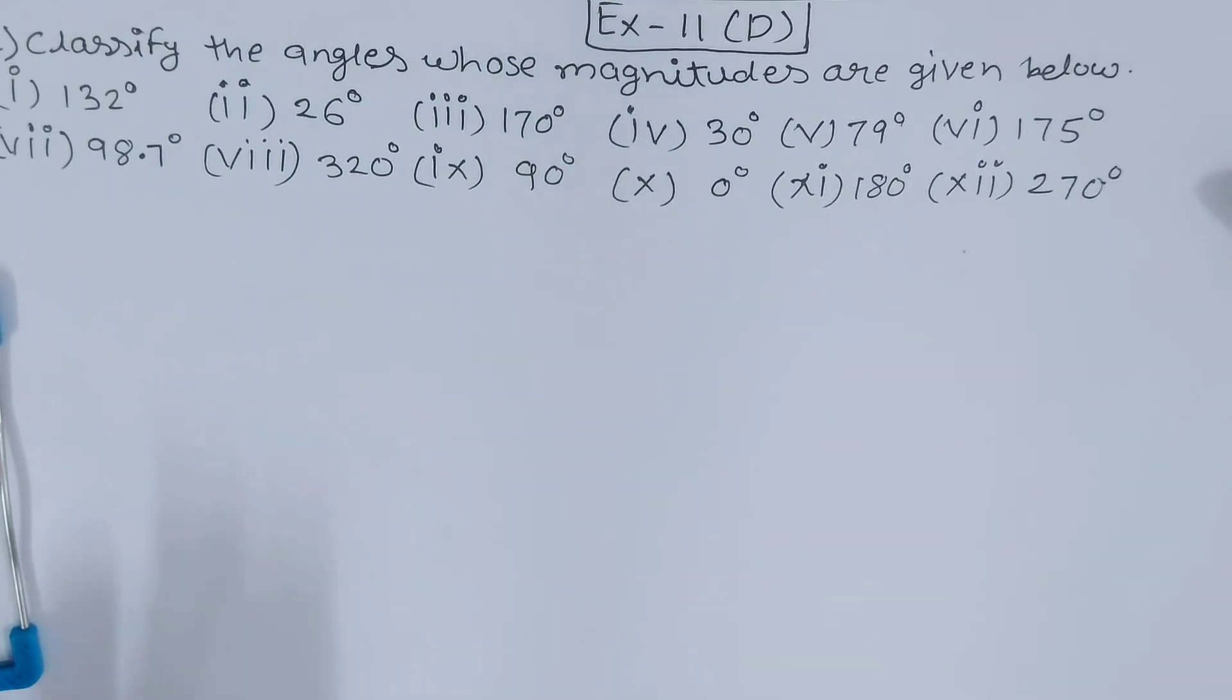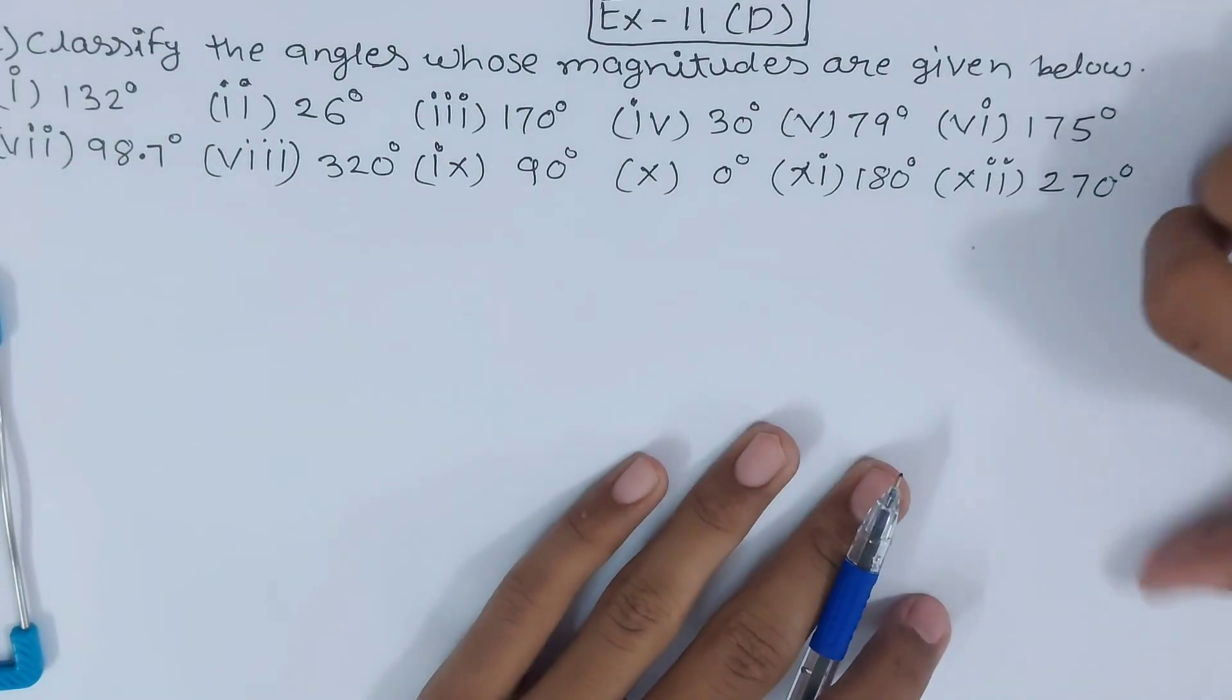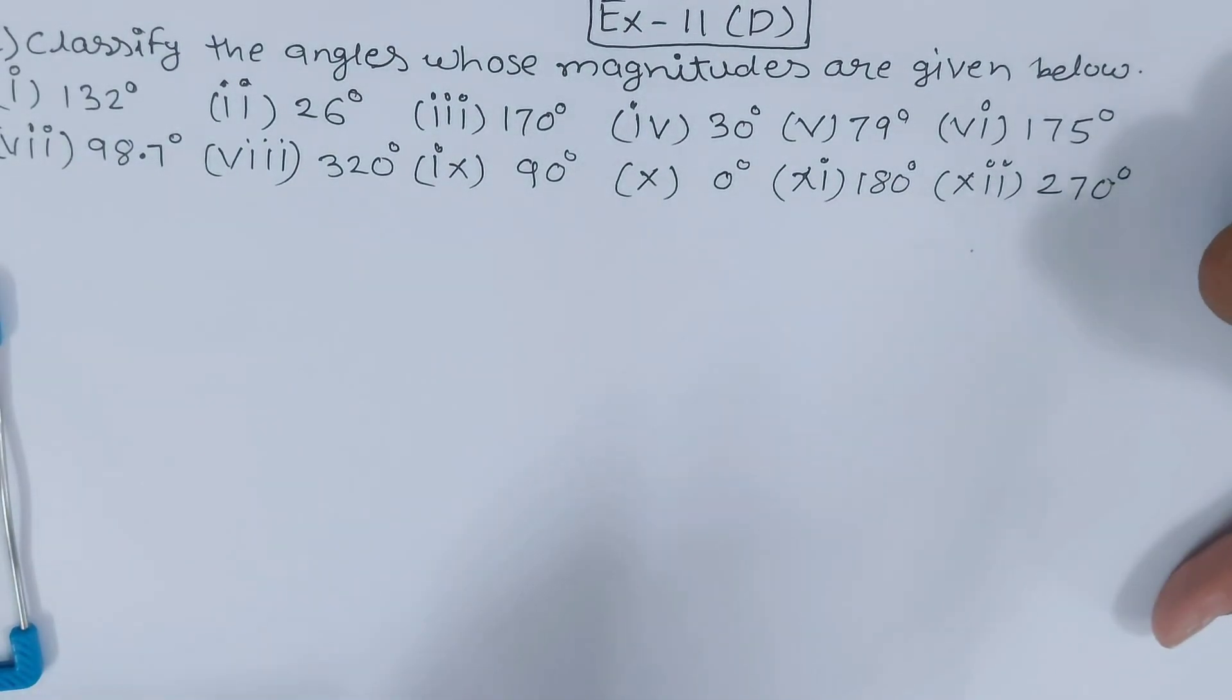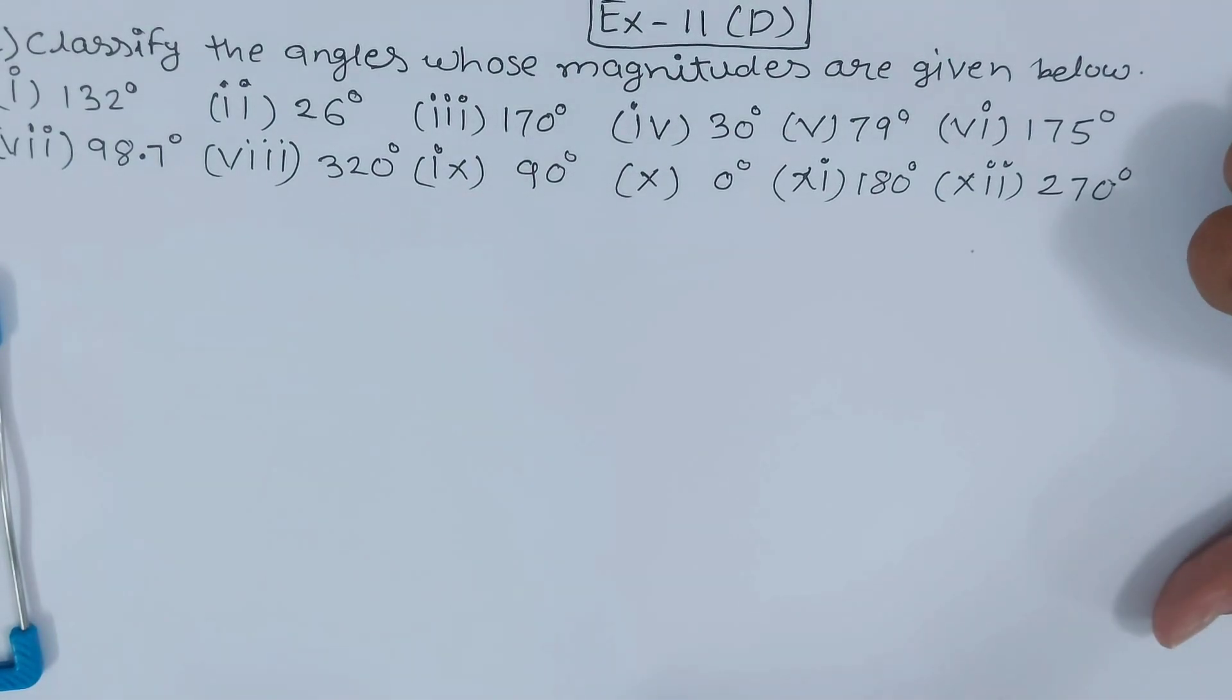First of all we studied what was an acute angle - acute angle has measure of less than 90 degrees. Then we studied what is obtuse angle - that was an angle which had measure of more than 90 and less than 180. Then we studied right angles which were angles with exactly 90 degrees of measure.